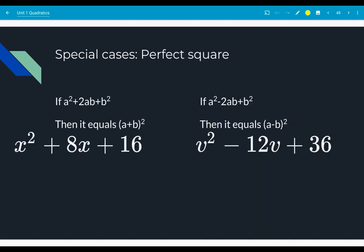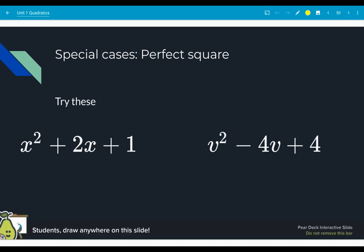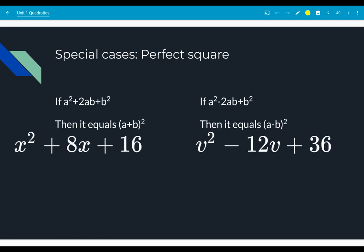So let's dig in. Let's work these two. If a squared plus 2ab plus b squared, if this is the format that the problem takes, then we know that it is a perfect square.